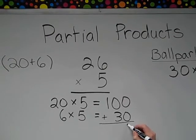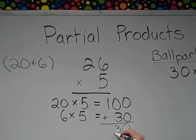Step five: add the product. 100 plus 30 equals a final answer of 130.